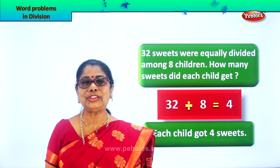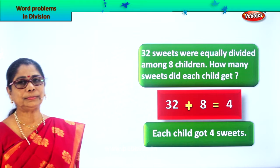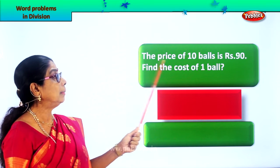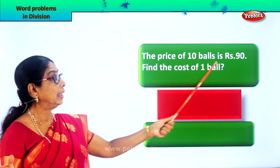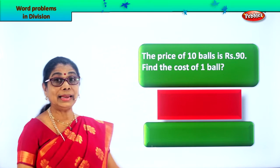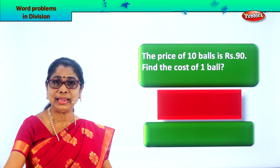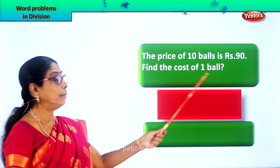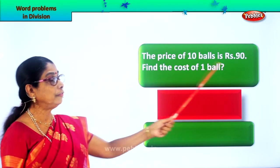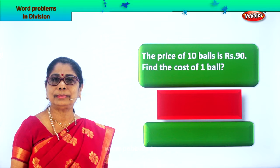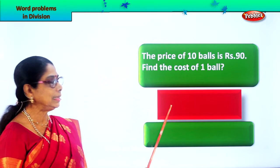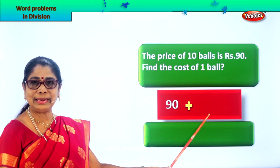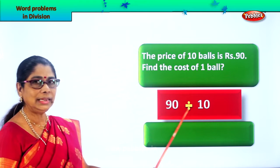Let's take another. Read aloud: the price of 10 balls is Rs. 90. There are 10 balls, and you have to give Rs. 90 for them. Find the cost of 1 ball. You buy 10 for 90 — what is the cost of 1? How many rupees? So: 90 rupees divided by 10, because 10 balls were bought. 90 divided by 10.